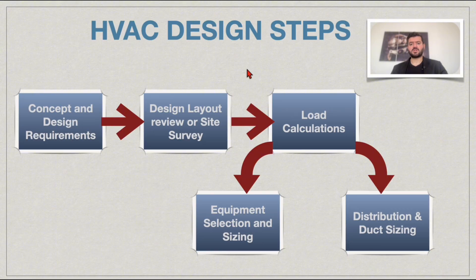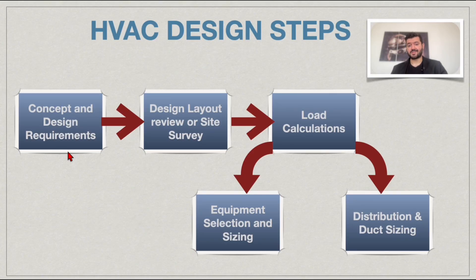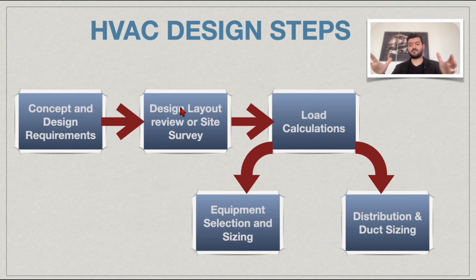First, you kick things off by understanding the concept and the design requirements. What are you dealing with — a cafe, a mall, a hospital, a building? Review the relevant standards to get information about the design requirements, consult with the architect and the client for a better understanding, then look at the plans and design layout — the top-view maps covering all the spaces and zones that need air conditioning.